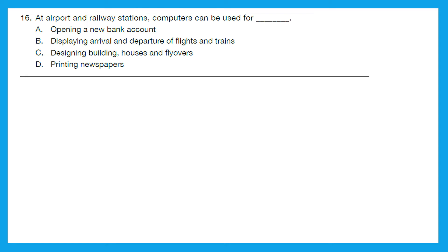Question 16: At airport and railway stations, computers can be used for? Opening a new bank account - no. Displaying arrival and departure of flights and trains - this is the right answer. Let's see others also. Designing buildings, houses, and flyovers - no. Printing newspapers - no. So the right answer is option B, displaying arrival and departure of flights and trains.